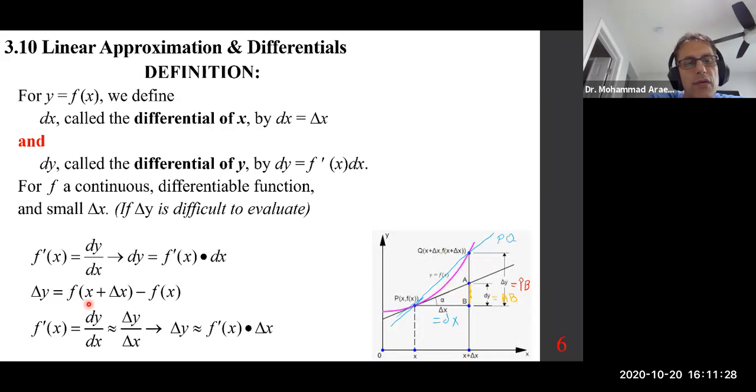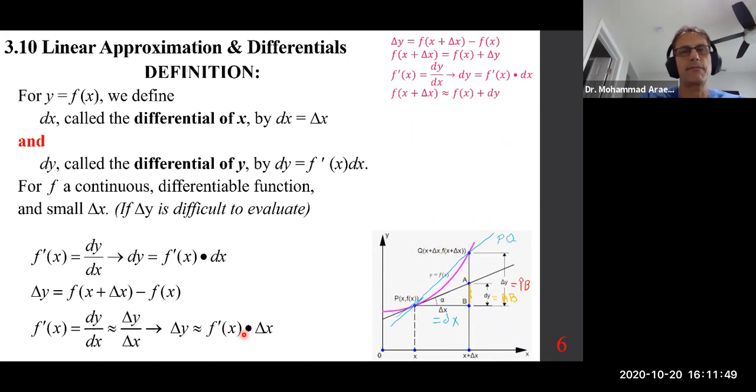Delta y is f(x + delta x) minus f(x) by precise definition, as you can see from the graph. And f'(x), which is dy/dx, precisely can be approximated by delta y over delta x. And therefore, delta y can be approximated by that. So it gives rise to the following equations.